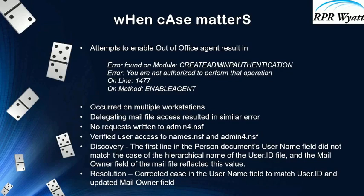Next, I went ahead and looked at admin4.nsf. Sure enough, no requests with regards to the out-of-office enablement or the mail delegation were being written to admin4. I looked at the security of names.nsf and admin4 — the user had the necessary rights. There was not an issue there.